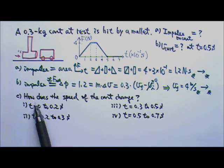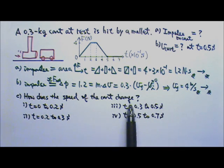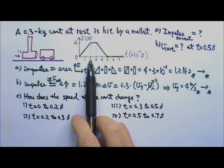And then Part C: How does the speed of the cart change? Speeding up, slowing down, or maintaining constant speed in the following time range? From t equals 0 to 0.2 seconds.